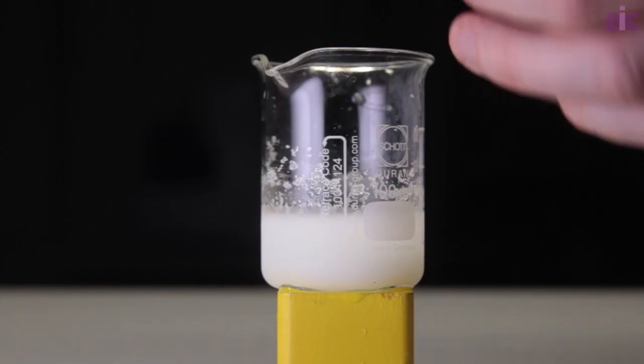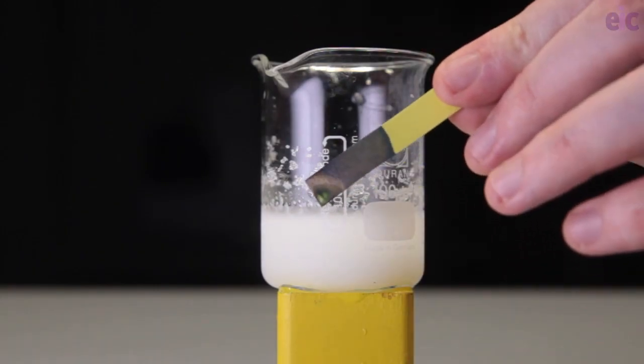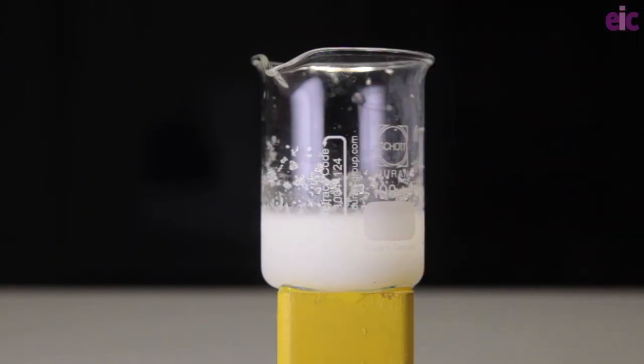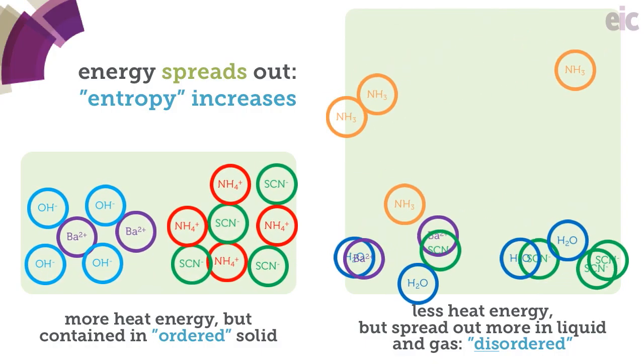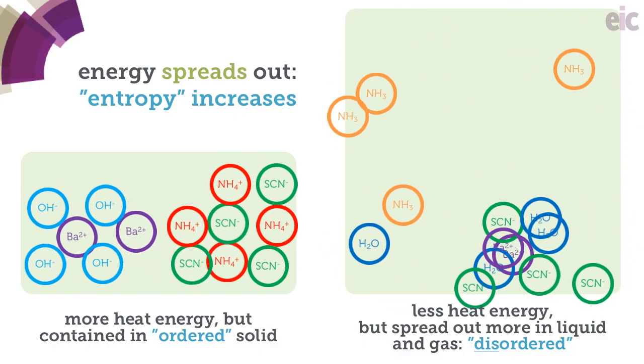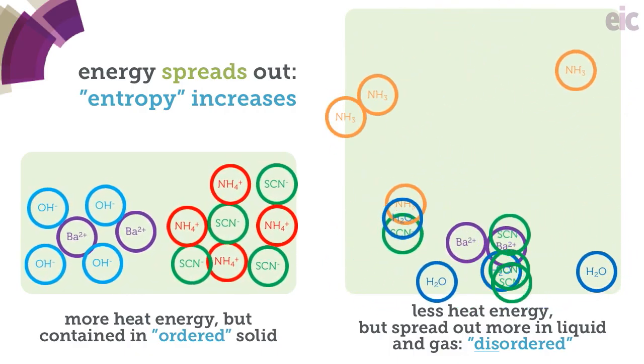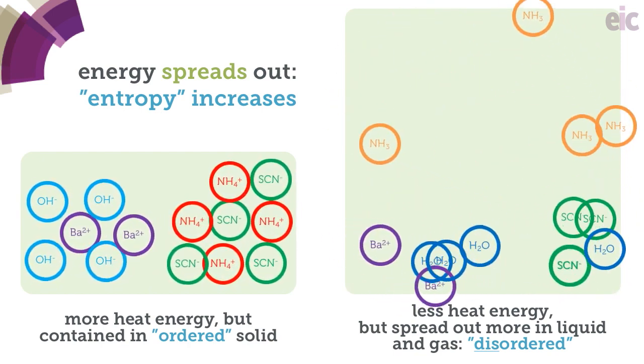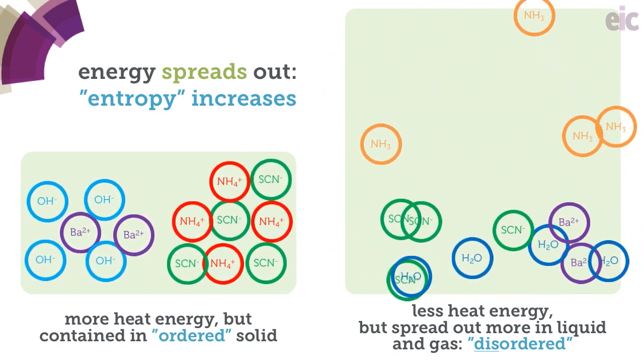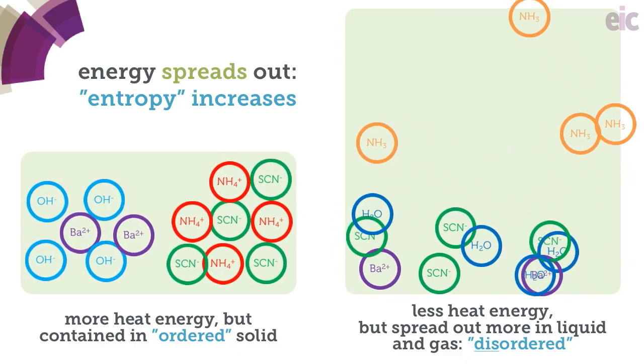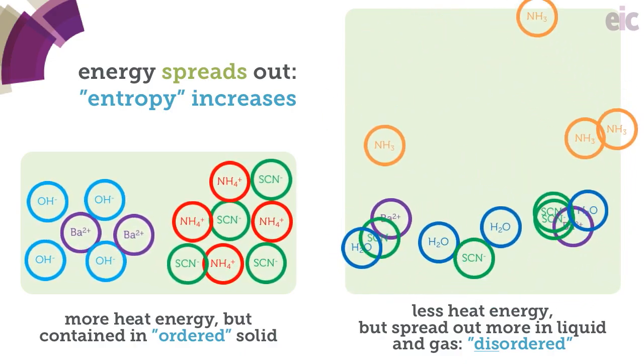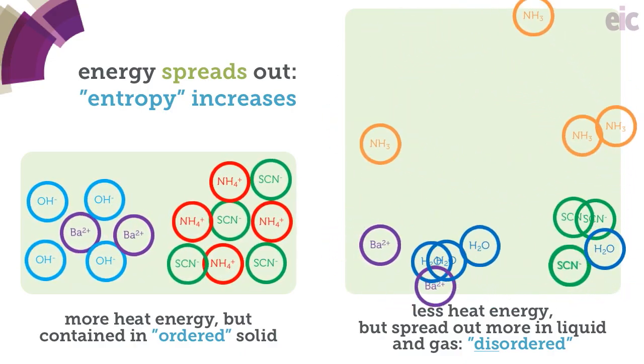Whilst the contents of the beaker themselves are getting colder, the energy contained within the solids is spreading out into the room in the ammonia vapours and throughout the beaker in the newly formed liquid. This spreading out of the energy in the particles from their initial solid state is enough to compensate for the drop in temperature of the beaker's contents. We say that the entropy of the chemicals has increased.